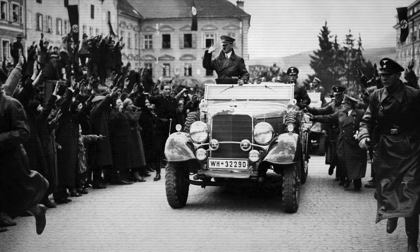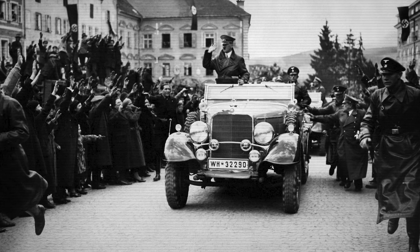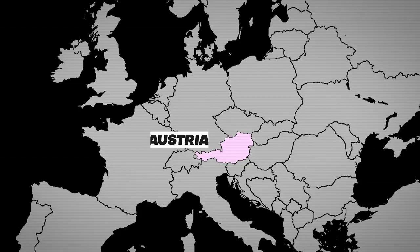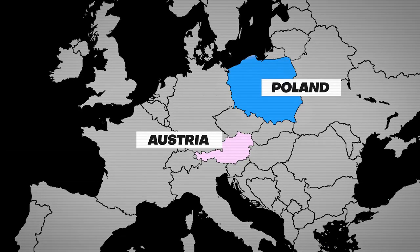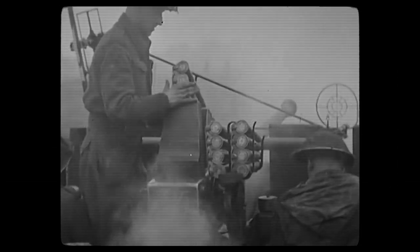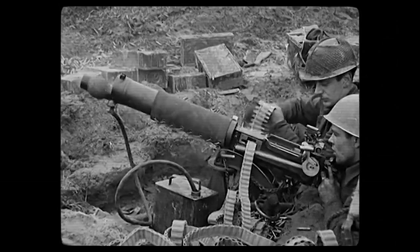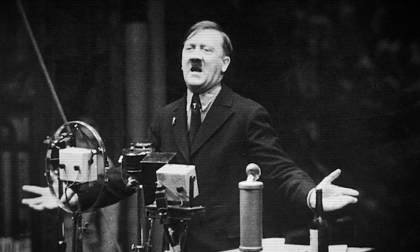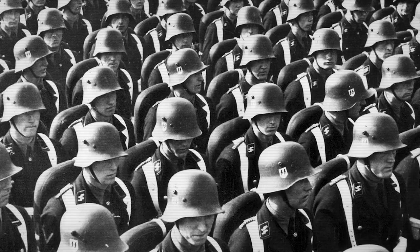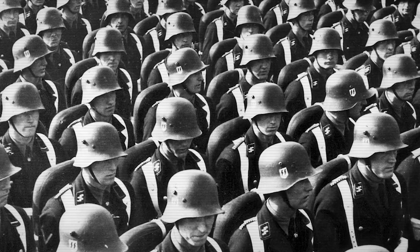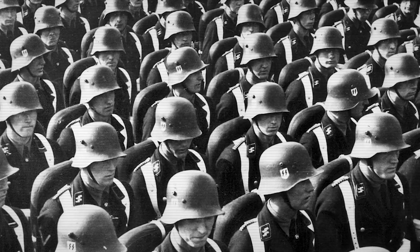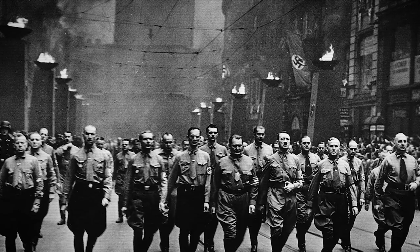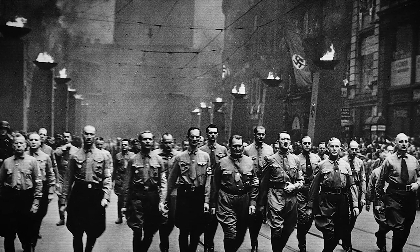From 1938 to 1939, Nazi Germany invaded territories of Austria and Poland, which marked the beginning of the Second World War. Hitler annexed both countries at a time when Nazi Germany planned on expanding its territories to other parts of Europe by attacking and invading them.